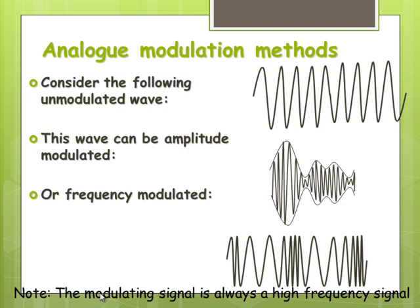The other option we could have would be frequency modulation, where we vary or alter that frequency. Please note, often we get asked a question in the exam to identify the carrier wave, identify the signal. The easiest thing to look for is the modulating signal always has the high frequency.